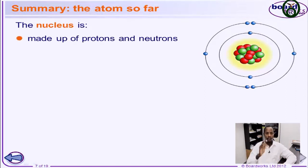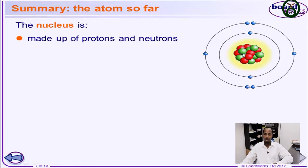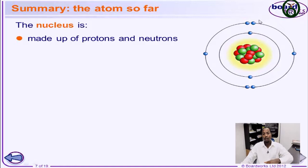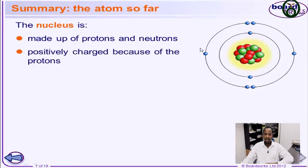The nucleus is made up of protons and neutrons. If you take a look at this atom, this is the nucleus — made up of the reddish ball and the greenish ball. These are the numbers of protons and the numbers of neutrons, and both of them are found in the nucleus of the atom. And these ones here are the shells and the orbits.